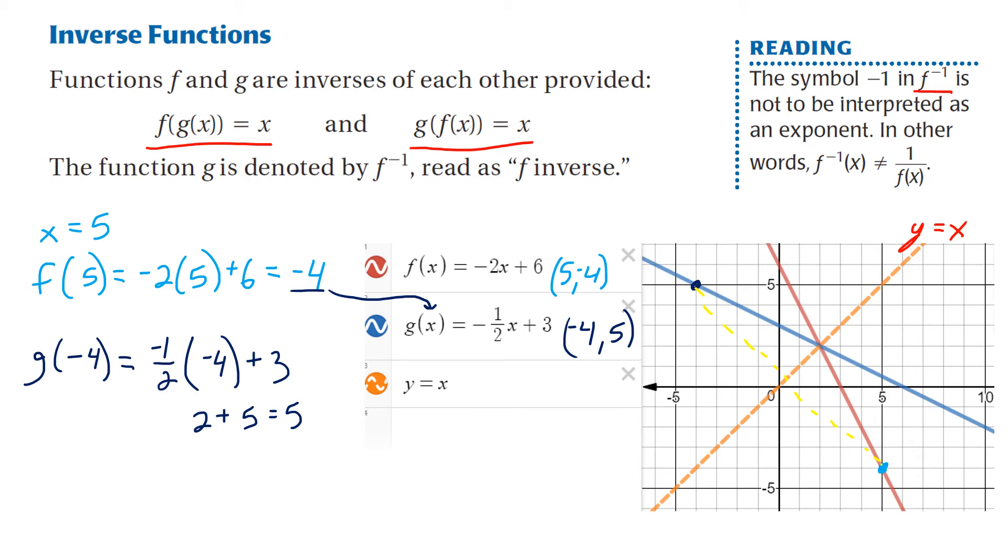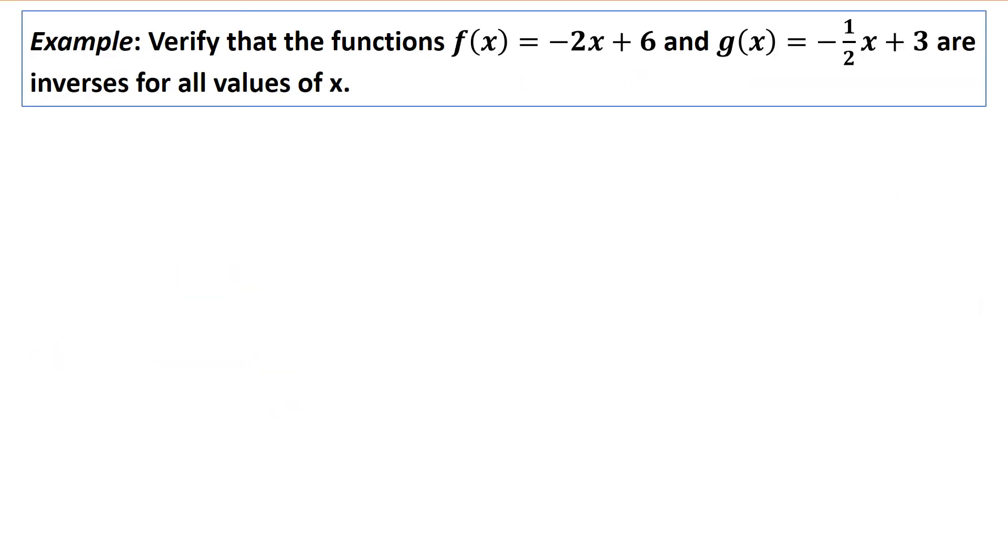Now again, the visual and also just substituting a point are just a quick way to check, and is a good way to gauge if they are inverses. But the only proper way to do it is to find f of g of x and g of f of x. So we're going to verify that the functions f(x) and g(x) in this case are inverses for all values of x.